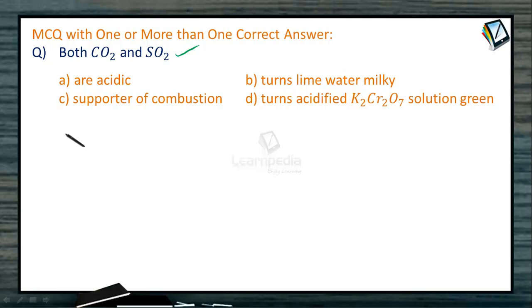Yes, that is correct because carbon dioxide is the anhydride of carbonic acid whereas sulfur dioxide is the anhydride of sulfurous acid.